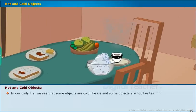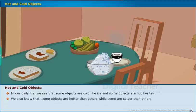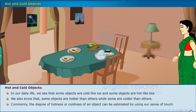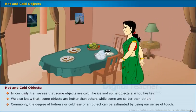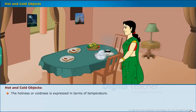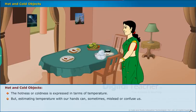In our daily life we see that some objects are cold like ice and some objects are hot like tea. We also know that some objects are hotter than others while some are colder. Commonly, the degree of hotness or coldness of an object can be estimated by using our sense of touch. The hotness or coldness is expressed in terms of temperature, but estimating temperature with our hands can sometimes mislead or confuse us.